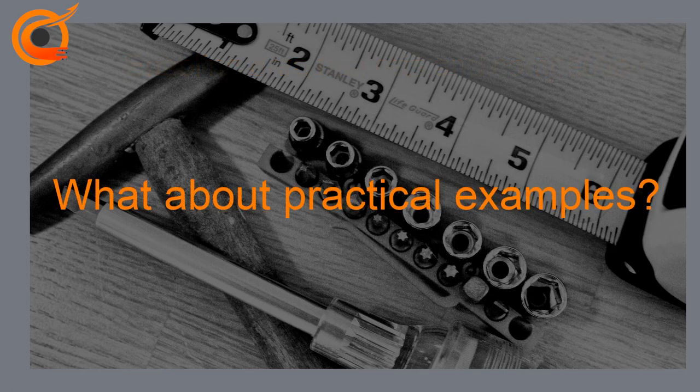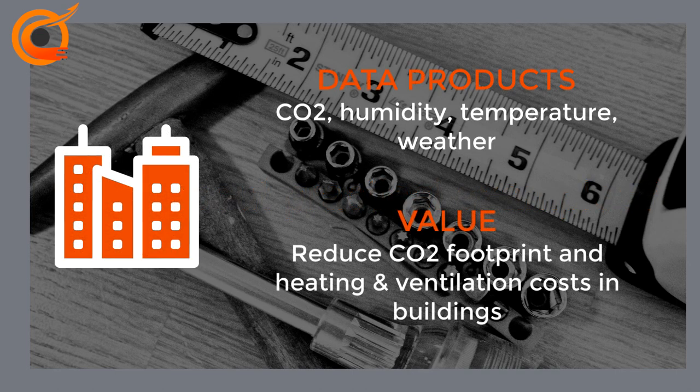What about practical examples? What are real data product implementations? CO2 levels, humidity, and temperature measurements are all examples of data products. With the help of this data, a building owner can optimize air ventilation. If you also add weather forecast as a data product, then heating can be optimized. This in turn can reduce the CO2 footprint and maintenance costs of the building.